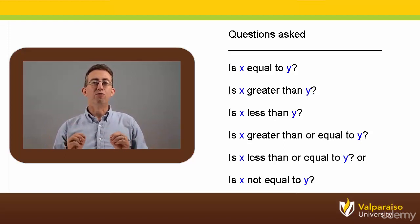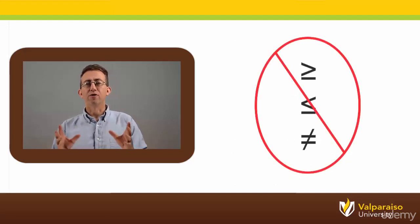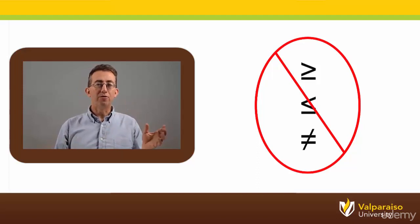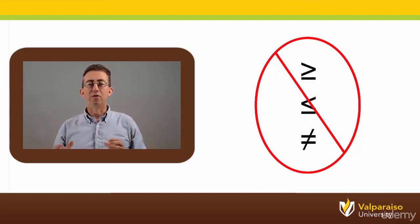However, the C programming language cannot make use of some of the same symbols that you may be familiar with. For example, there are not individual characters for greater than or equal to, less than or equal to, or not equal to.